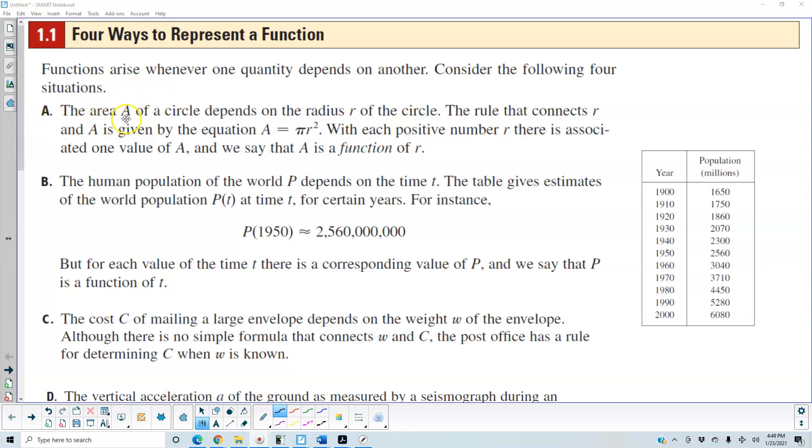Part A: The area A of a circle depends on the radius r of the circle. The rule that connects r and A is given by the equation A which is equal to pi r squared. With each positive number r there is associated one value of A and we say that A is a function of r.